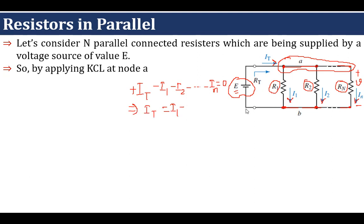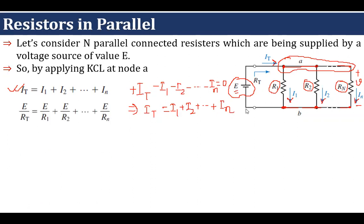So IT equals I1 plus I2 plus dot dot dot up to In. Now convert all these currents into the form of voltage and resistance using Ohm's law. IT can be written as E upon RT, where RT is the net resistance across this node. So IT equals E upon RT, the total resistance.